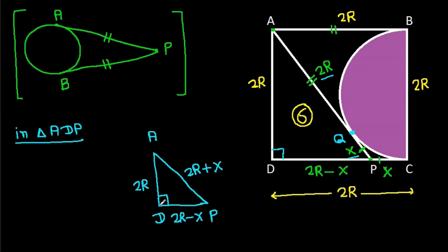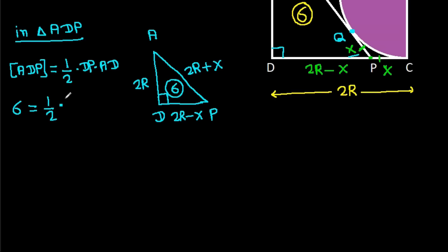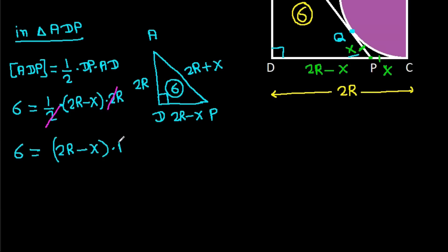And the area of ADP is 6. The area of ADP will be one-half times base DP times height AD. So 6 = (1/2) times (2R minus X) times 2R. The 2 gets cancelled, so 6 = (2R minus X) times R, which gives 6 = 2R² minus XR.